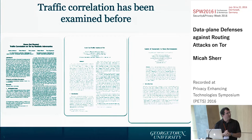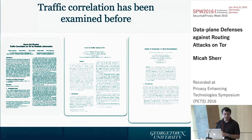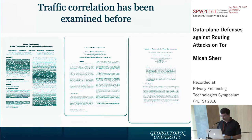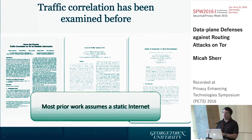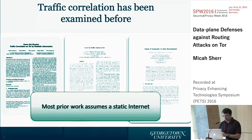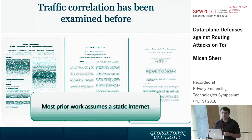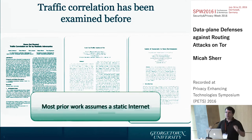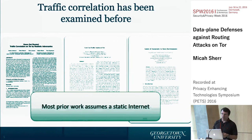Traffic correlation has been examined a lot before. There are a lot of really great papers on this that show how to do this. Steven has a good one that shows how to do this really efficiently. Most of the prior work — with some notable exceptions, Pratik's work on Raptor being a very notable exception — assumes a static internet. They take TOR as it is at some point in time, freeze a map, and then do some analysis based on that frozen map and say, okay, TOR's security is X.